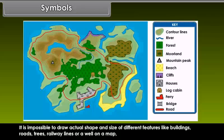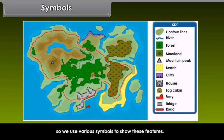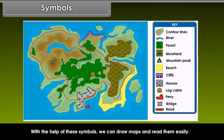Symbols: It is impossible to draw actual shape and size of different features like buildings, roads, trees, railway lines or a well on a map. So, we use various symbols to show these features. With the help of these symbols, we can draw maps and read them easily.